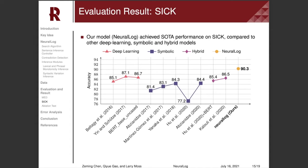Our second experiment evaluates our system on the SICK dataset. As the results show, our model outperforms the deep learning baselines and the symbolic systems. Comparing to the two hybrid models, which also explore a way of combining logical methods and deep learning models, our system shows higher accuracy. Therefore, our framework for joint logic and neural reasoning achieves state-of-the-art performance on SICK.